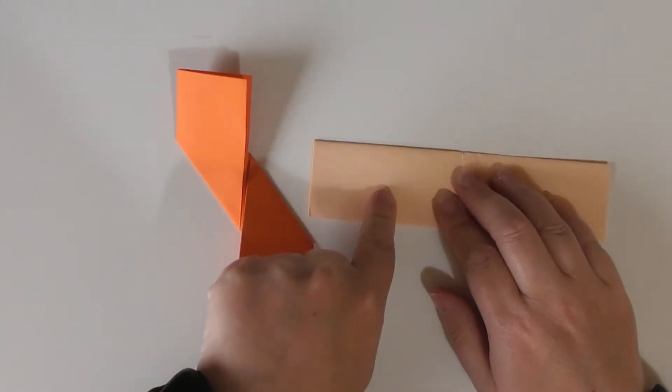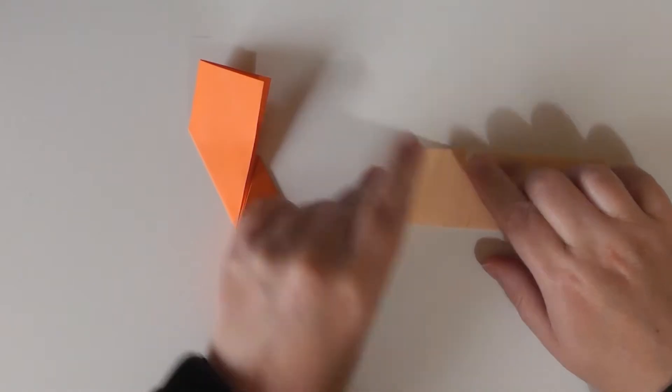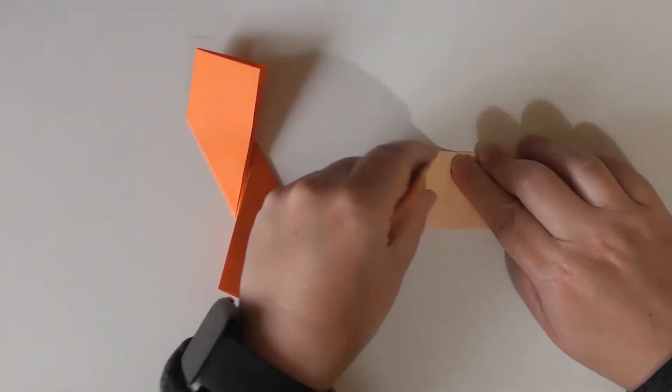So for this one, as we folded this side up, we now need to fold it down for the mirror image. So again, the top edge will go down along that center edge.